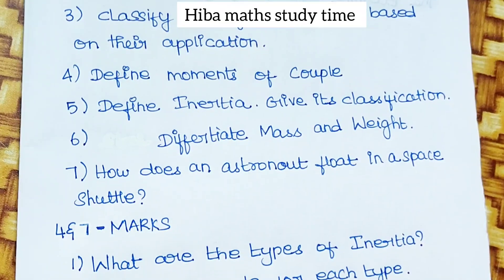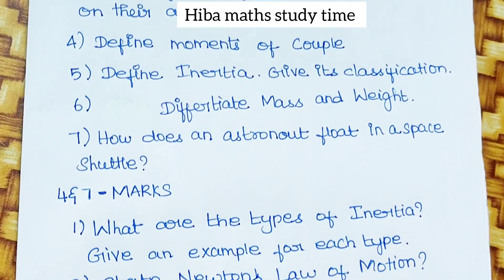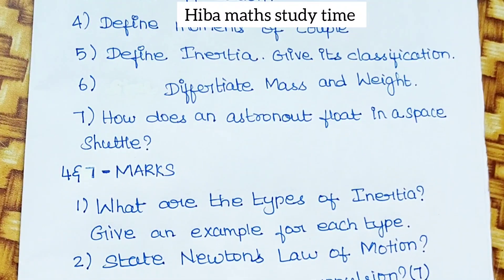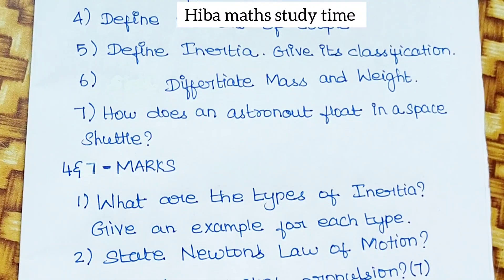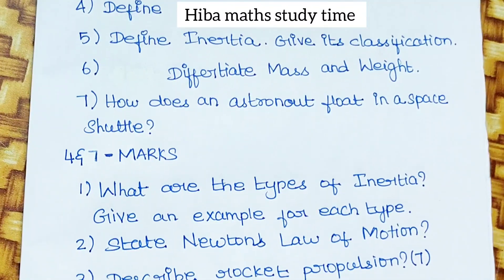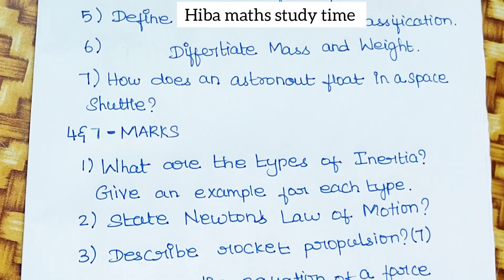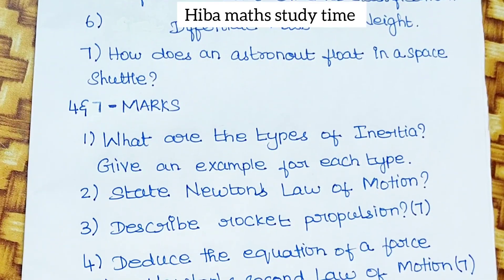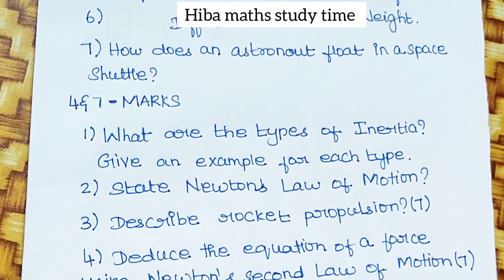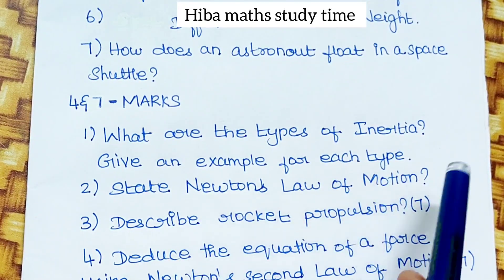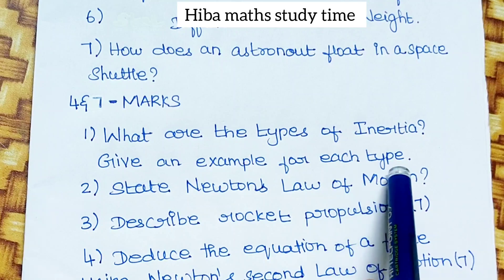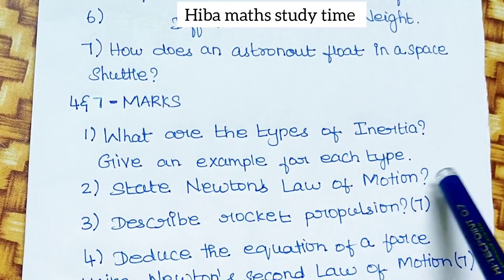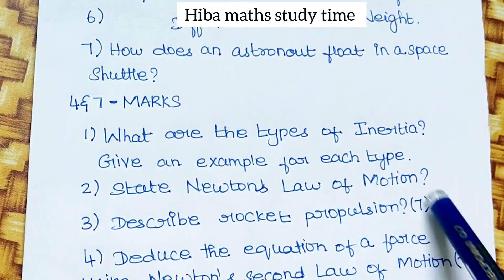Next, 4-mark and 7-mark questions. First question — what are the types of inertia? Give an example for each type. This is a 4-mark question. Next — state Newton's laws of motion. This is also a 4-mark question.